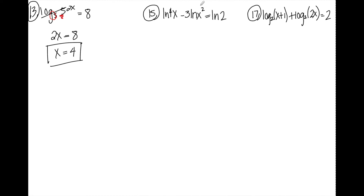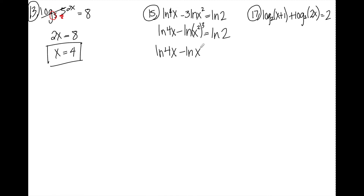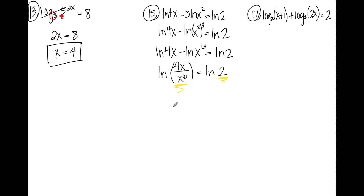In number fifteen, I have my variable in two spots: ln of 4x minus 3 ln of x squared. My goal is to get this into one log. First, I bring the multiplication in front to become an exponent, giving ln of x squared cubed. With a power to a power, I multiply the exponents, so I have ln of 4x minus ln of x to the sixth equals ln 2. Subtracting logs means dividing, so I get ln of (4x over x to the sixth) equals ln of 2. Since I have ln of something equals ln of something, those two expressions must be equal, so I drop the ln's: 4x over x to the sixth equals 2.